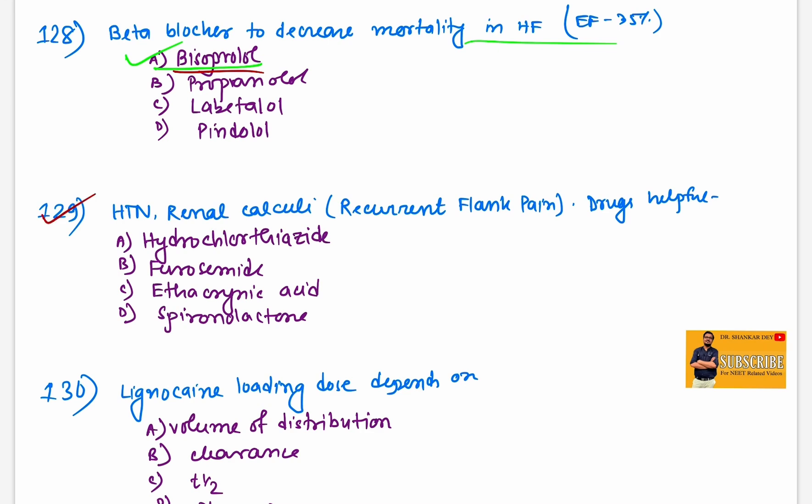Hypertensive patient with recurrent renal calculi, recurrent flank pain, which drug is helpful. As there is renal calculi, furosemide should be avoided, ethacrynic acid not used nowadays, spironolactone doesn't help. Best option will be hydrochlorothiazide for renal calculi patient.